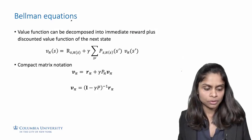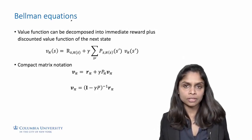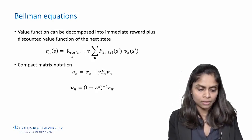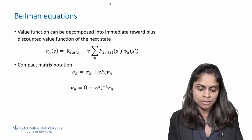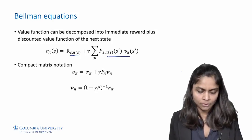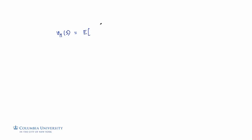This is where Bellman equations become useful. Bellman equations, named after their discoverer Richard Bellman, provide a recursive formula for evaluating the value function. The idea is to decompose the value of a state into the expected immediate reward plus the discounted value function of the next state. By definition, the value of a policy in a state is given by the expected sum of discounted rewards — that's the reward in the first round, plus gamma times the reward in the second round, plus gamma squared times the reward in the third round, and so on, given that the starting state is S.